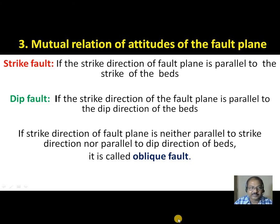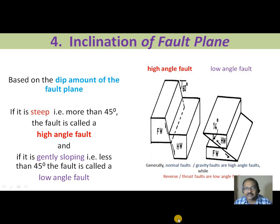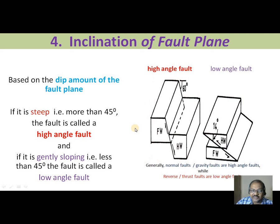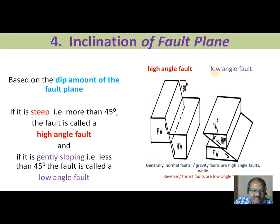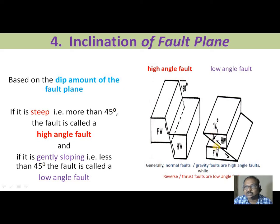Based on the inclination of the fault plane — if it is steep, say more than 40 degrees, the fault is called a high angle fault. For example, if the angle is 60 degrees, it is a high angle fault. If it is gently sloping, i.e., less than 40 degrees, it is called a low angle fault. For example, an angle of 16 degrees means it is less than 40 degrees, hence a low angle fault.